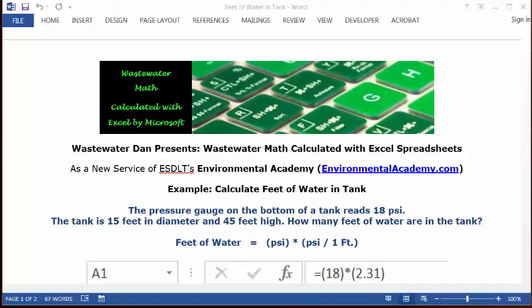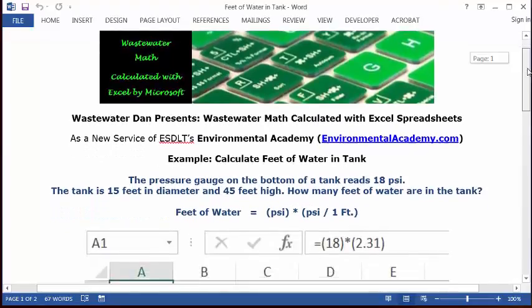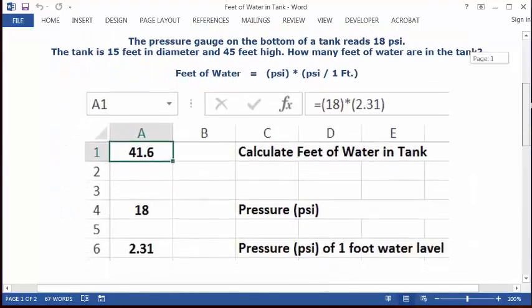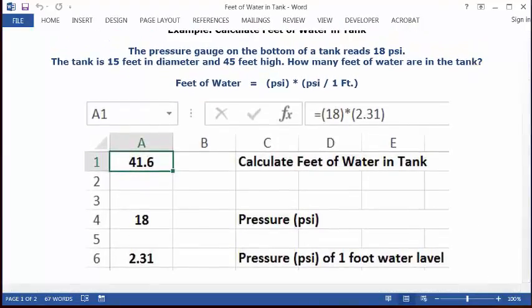So we're going to set up a formula that says feet of water equals PSI times the conversion factor from feet to PSI. So let's see how this will fit inside an Excel spreadsheet.